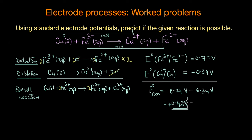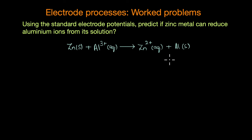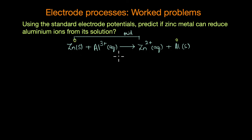This positive value of 0.43 V indicates the reaction is favorable and thermodynamically spontaneous. The next question asks: using standard electrode potentials, predict if zinc metal can reduce aluminium ions from its solution. The reaction would be: Zn(s) + Al³⁺ → Zn²⁺ + Al. Zinc changes its oxidation state from 0 to +2, so zinc is getting oxidized, while aluminium changes from +3 to 0, so aluminium is getting reduced.